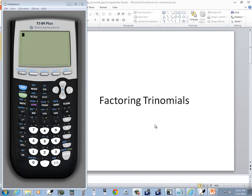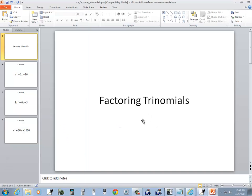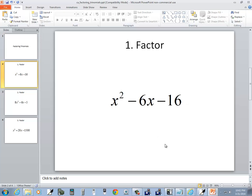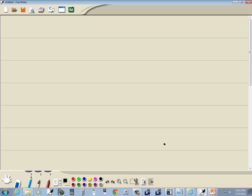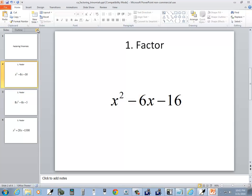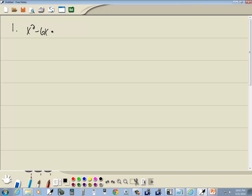Let's take a look at how we can use a TI-84 Plus to help us factor trinomials. Let's take a look at our first problem here. We've got x squared minus 6x minus 16.